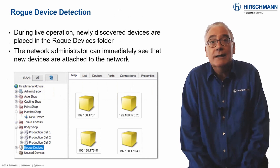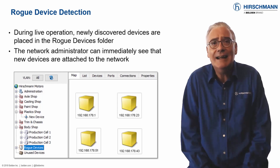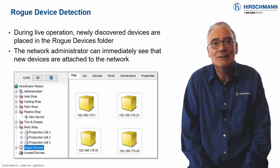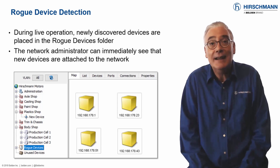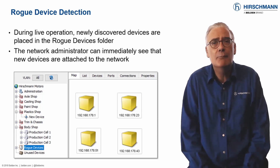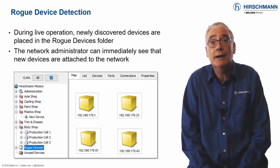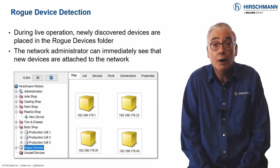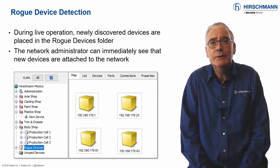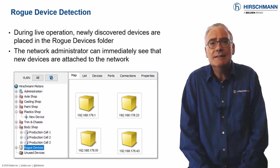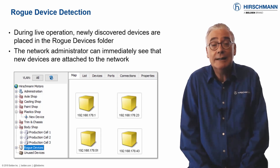In a perfect world, industrial networks should be static — the network administrator will know exactly which end devices are connected to the network. In reality, it's difficult to prevent users from connecting new devices. The connection of unauthorized devices can have many consequences: additional or inappropriate traffic may destabilize the network, leading to poor performance or network downtime. Unknown devices may not conform to your network security policy and therefore introduce new vulnerabilities. In any case, if new devices are introduced to the network, you need to know about it.